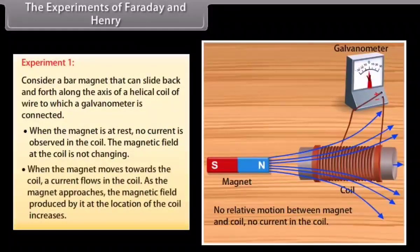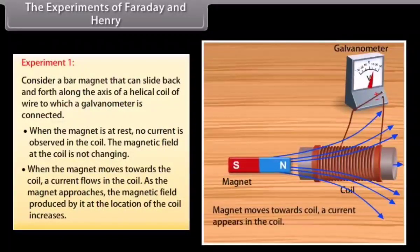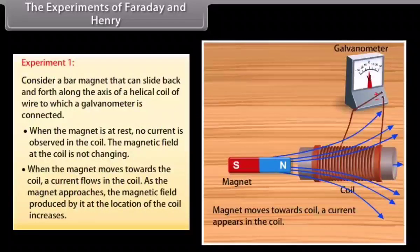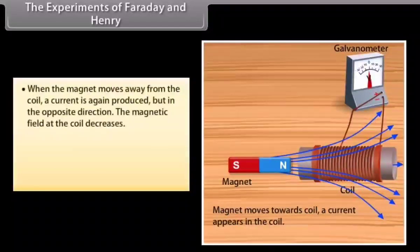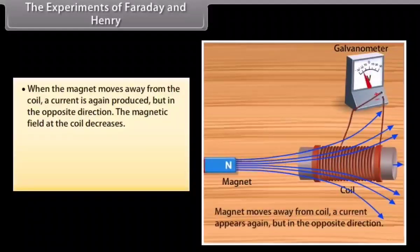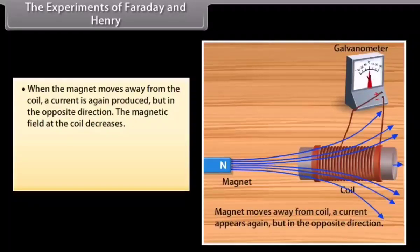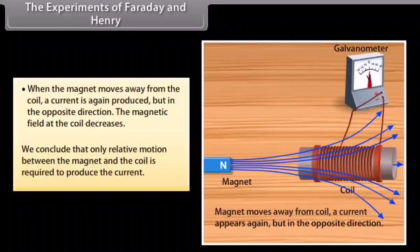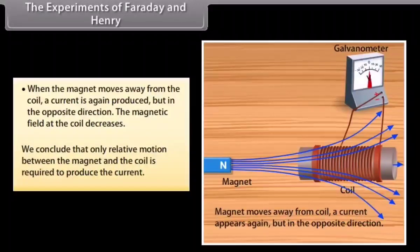When the magnet moves towards the coil, a current flows in the coil. As the magnet approaches, the magnetic field produced by it at the location of the coil increases. When the magnet moves away from the coil, a current is again produced but in the opposite direction, and the magnetic field at the coil decreases. We conclude that only relative motion between the magnet and the coil is required to produce the current.